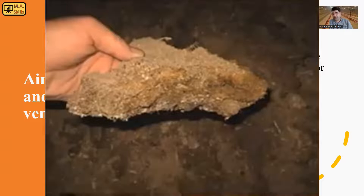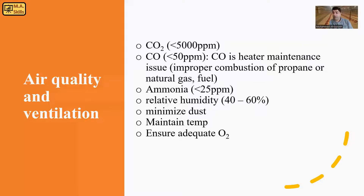If you have wet litter or caked litter — meaning compacted litter materials — you're going to experience high ammonia levels in the barn, and it will reduce your birds' performance. Also, some dietary factors are really important, specifically the protein and amino acid balance in the diet. If you don't have a good balanced diet, you're going to experience ammonia emission in the barn, and it's going to hurt bird performance.